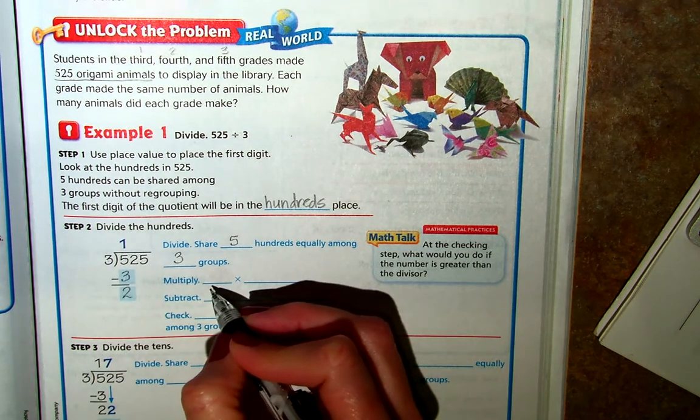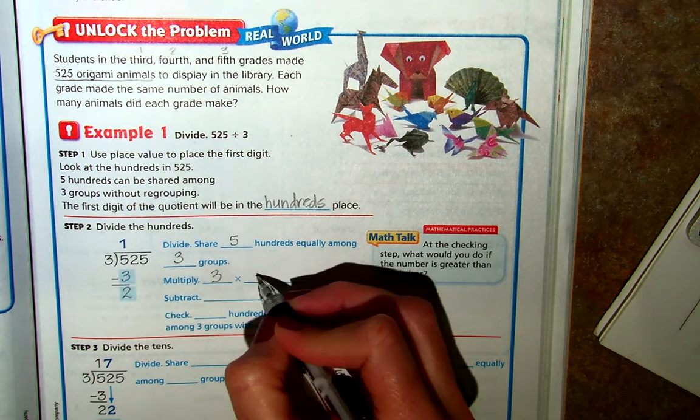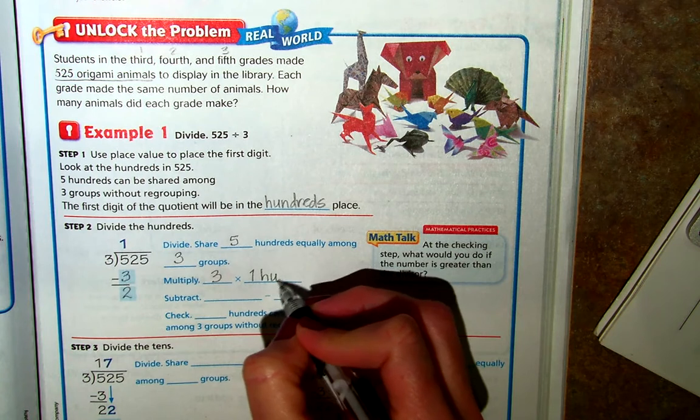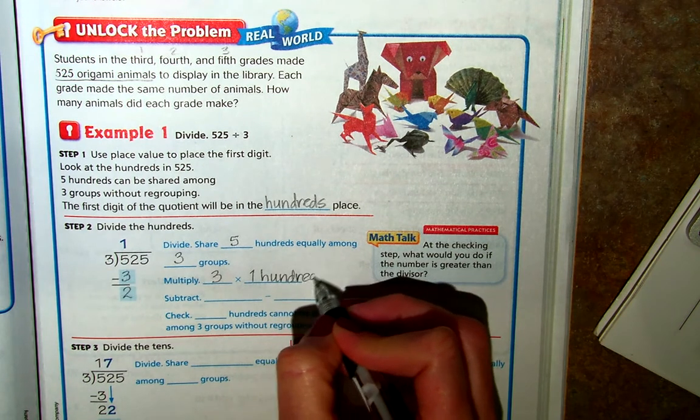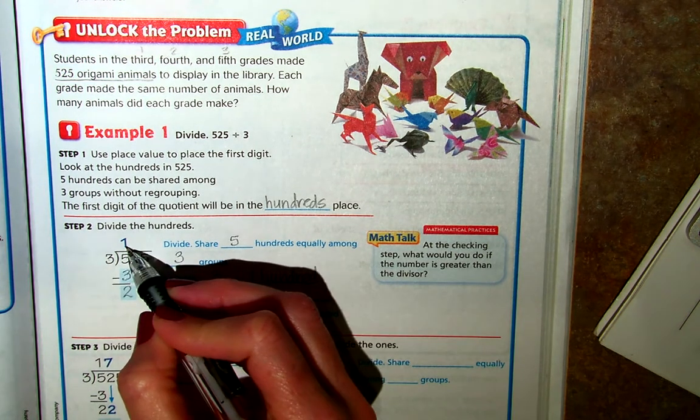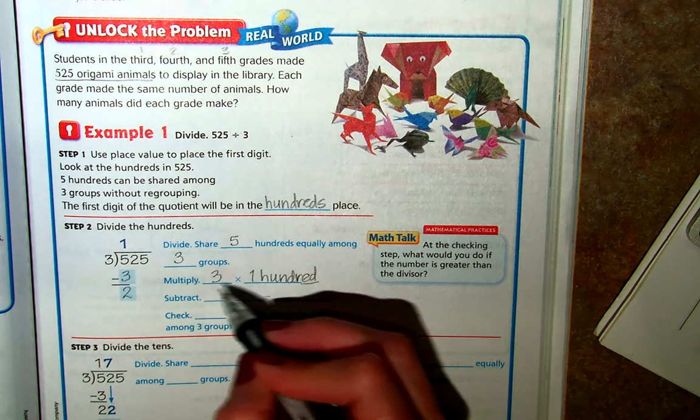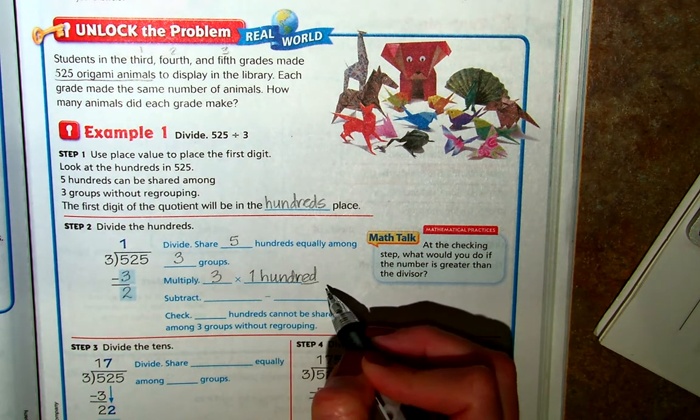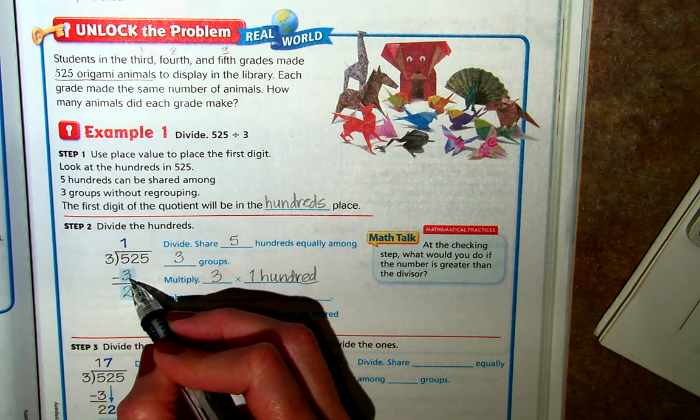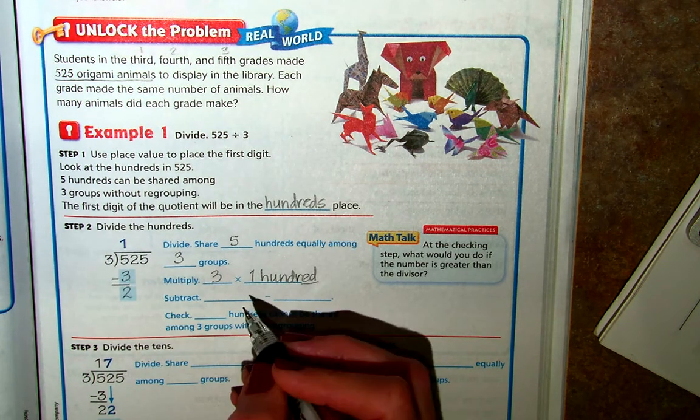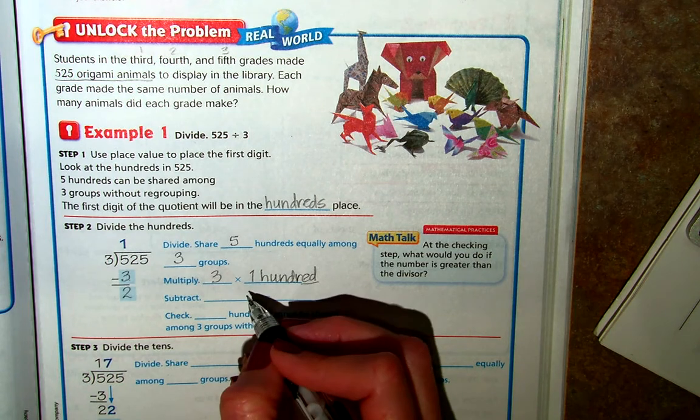We multiply 3 times 100, and that is because it is in the hundreds place, and there's one of them. So we're really multiplying 3 by 100, and so we subtract 3 from the hundreds. So we're going to subtract 5 hundreds.